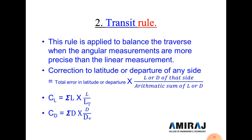The second rule is the Transit rule, applied when angular measurements are more precise than linear measurements. Correction to latitude of any side = total error in latitude (ΣL) × latitude of that side / arithmetic sum of latitudes. Similarly, correction to departure: CD = ΣD × departure of that side / arithmetic sum of departures.